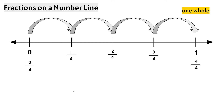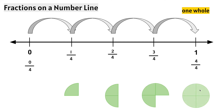We can also think of it like this: 0 fourths, 1 fourth, 2 fourths, 3 fourths, and 4 fourths — which means 1 whole.